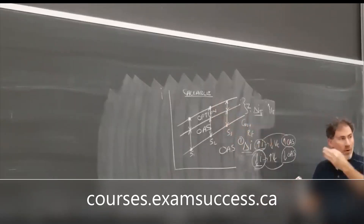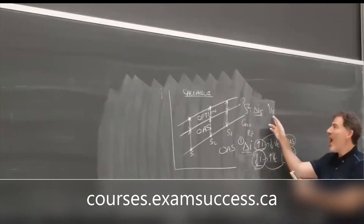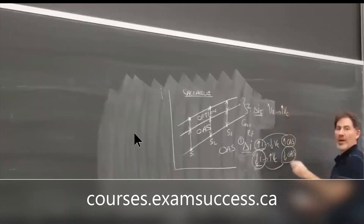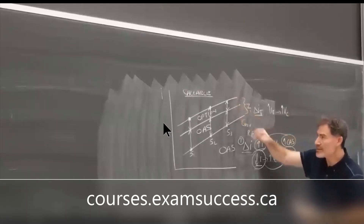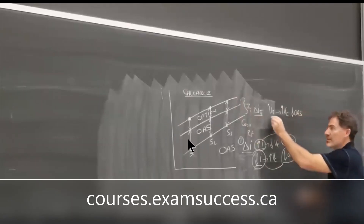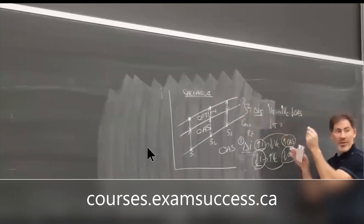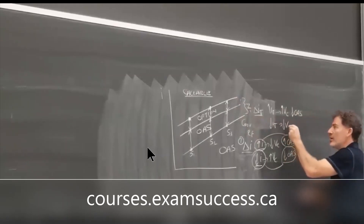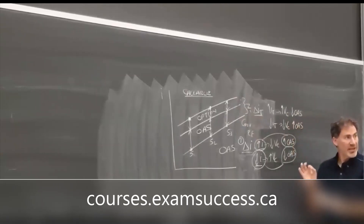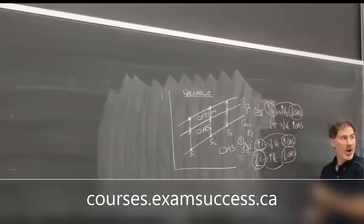Working through these visualizations, you'll understand that the option-adjusted spread is the most appropriate measure because it removes the value of the option, leaving the spread that represents just the credit risk. We're ignoring liquidity risk here, and if you have a deep fixed income background, that can work against you. Visualizing and walking through this is a very powerful way to handle these learning outcome statements.